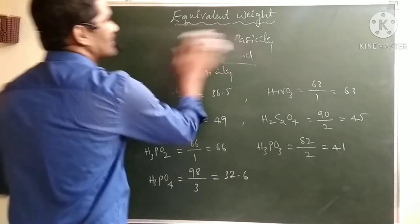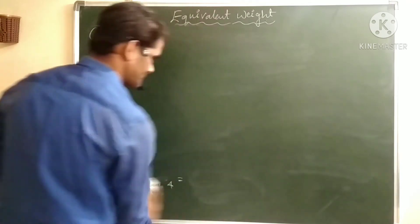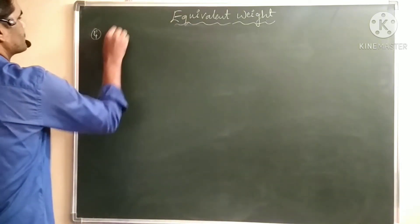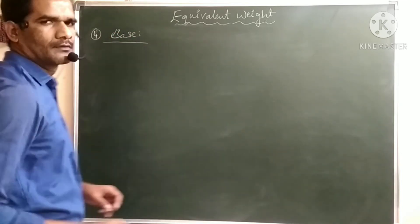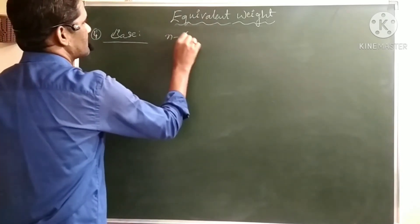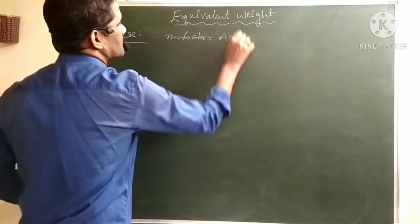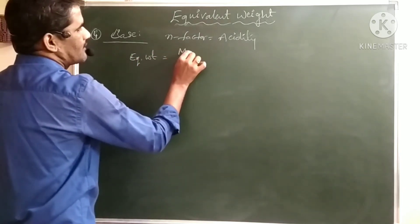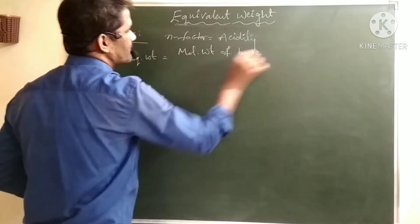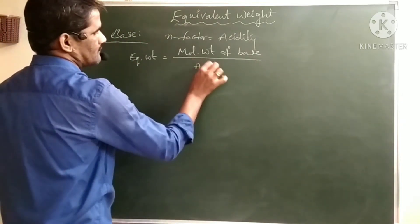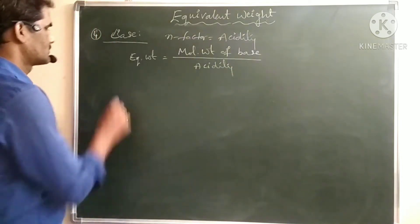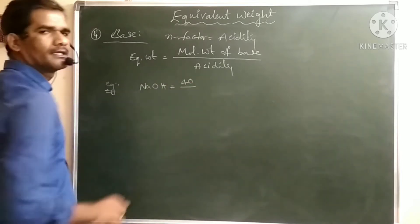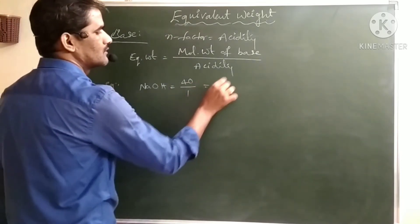Next, equivalent weight for bases. The n-factor for bases is its acidity. The equivalent weight of a base equals molecular weight of the base divided by its acidity or n-factor. For sodium hydroxide, molecular weight is 40 and acidity is 1, so equivalent weight is 40.